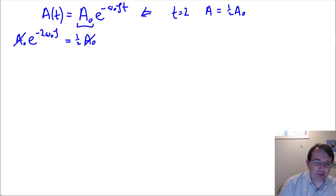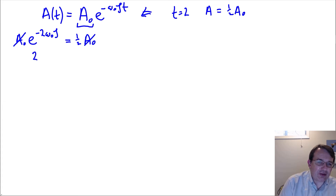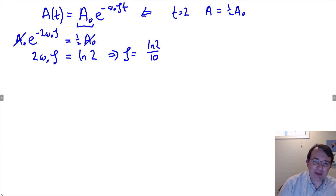We can cancel A₀ on both sides — the initial amplitude doesn't matter. Flipping both sides to make the exponent positive gives e to the 2 omega-naught zeta equal to 2. Taking natural logarithms: 2 omega-naught times zeta equals the natural log of 2. Since omega-naught is 5 radians per second, we have 2 times 5 equals 10 in the denominator, so zeta equals ln(2) divided by 10, which is 0.0693 to three significant figures.